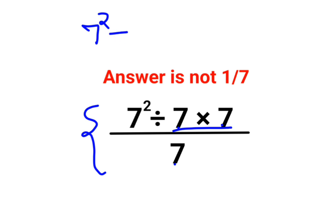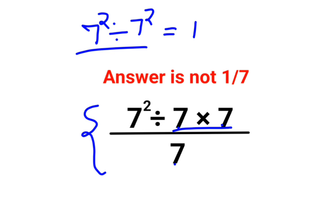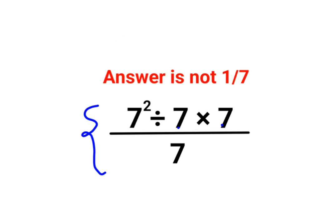They think: 7 squared divided by 7 squared becomes 1, and then everything divided by 7 gives 1 over 7 — and that is what a lot of people got as their answer. But that is incorrect. The reason is that the entire calculation of the numerator is wrong.